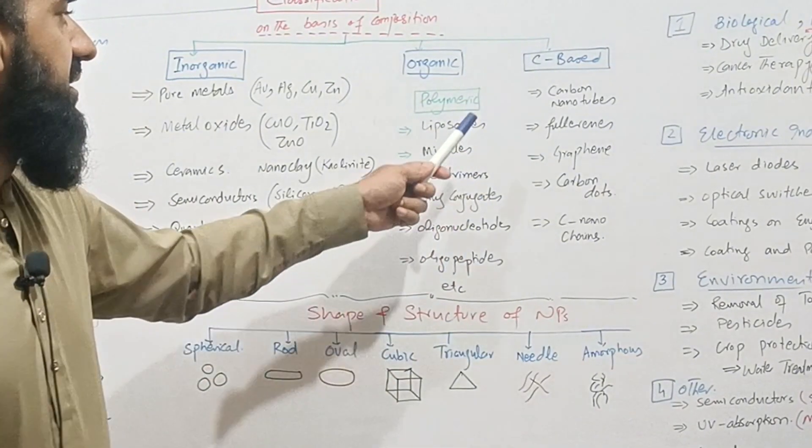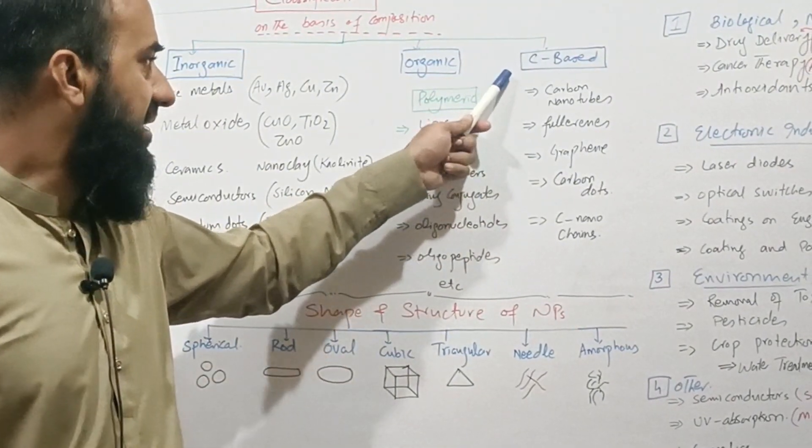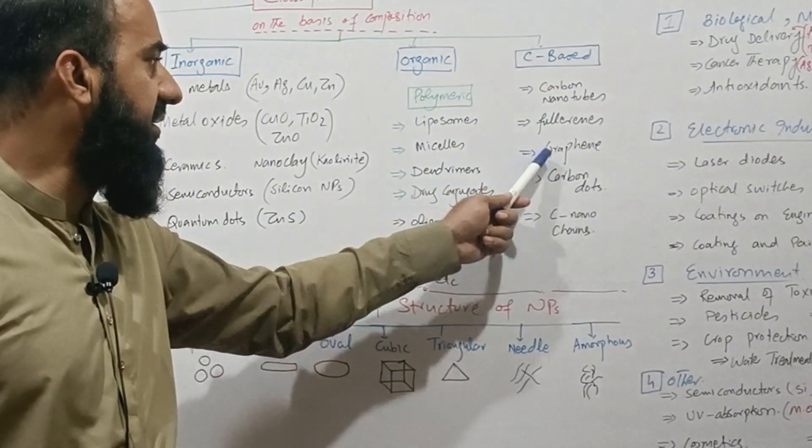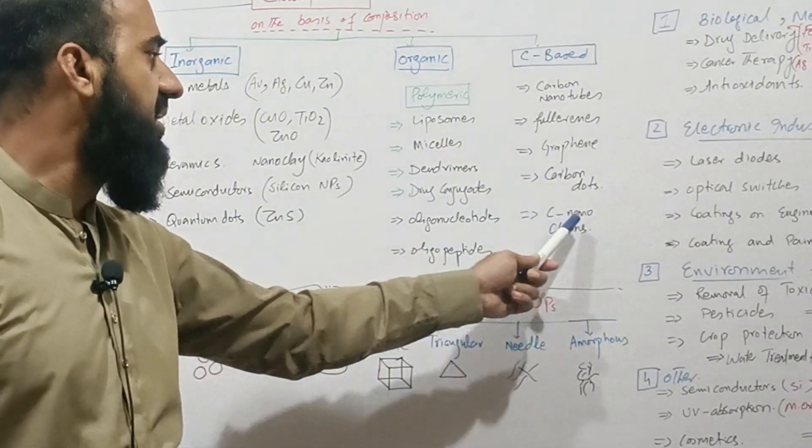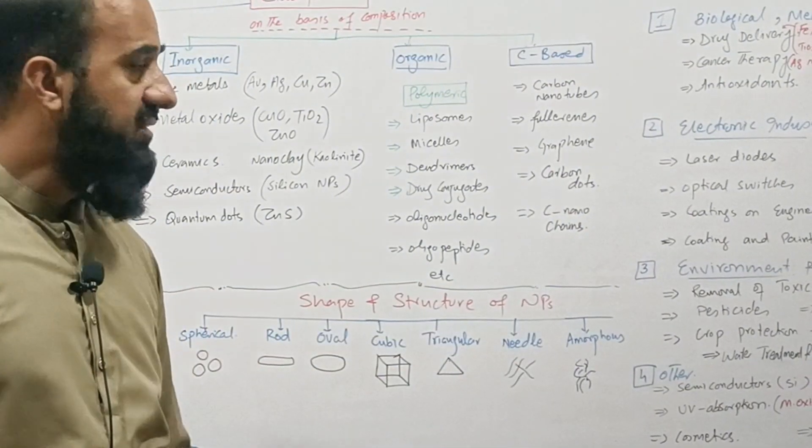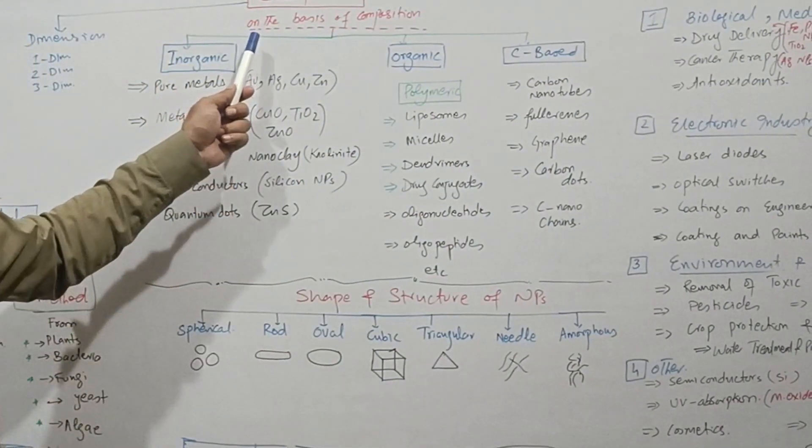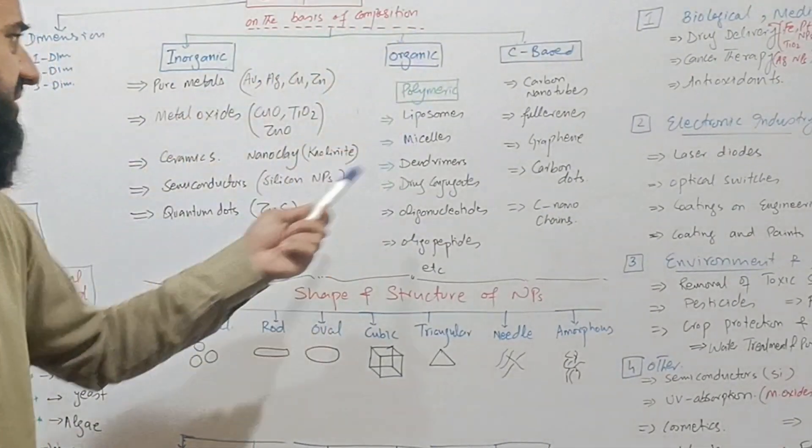Another important class of nanoparticle is carbon-based nanoparticle which includes carbon nanotubes, fullerene, graphene, carbon dots, and carbon nano chains. These are three main classes of nanoparticles which are based on the composition or material.